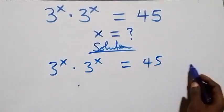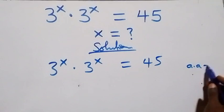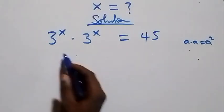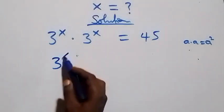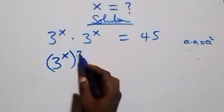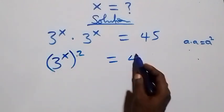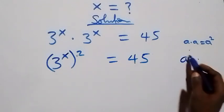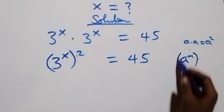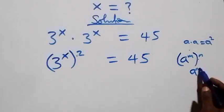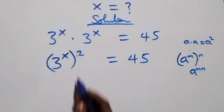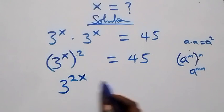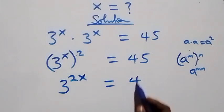This follows from when we have a times a, which we can rewrite as a squared. That is, here we can write this as three raised to power x, all squared, equals to forty-five. Then, from when we have a raised to power m, raised to power m, this is the same as a raised to power m times m. So this becomes three raised to power two x equals to forty-five.